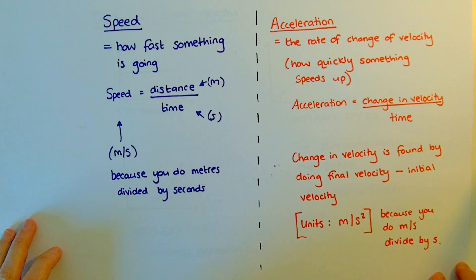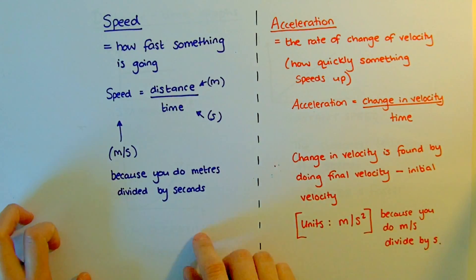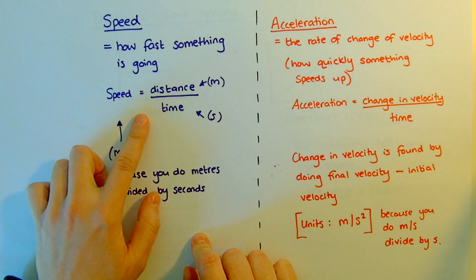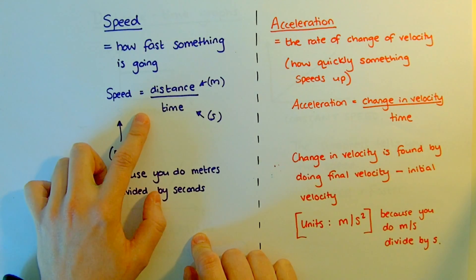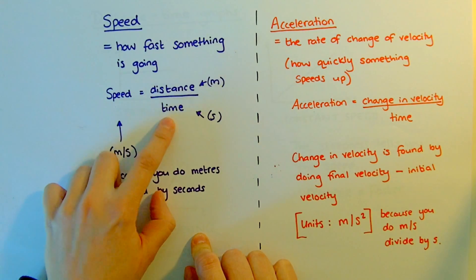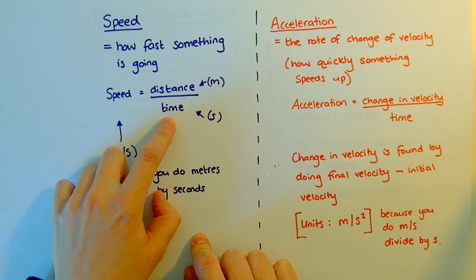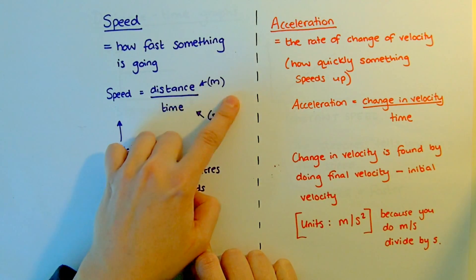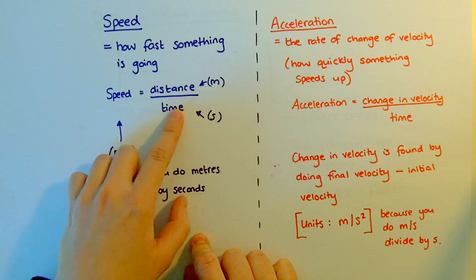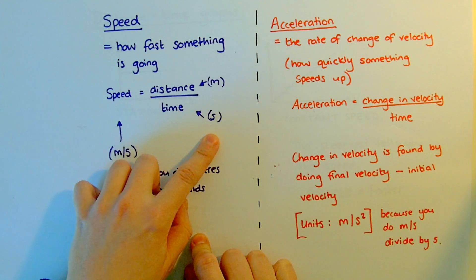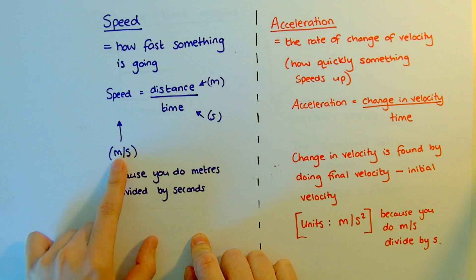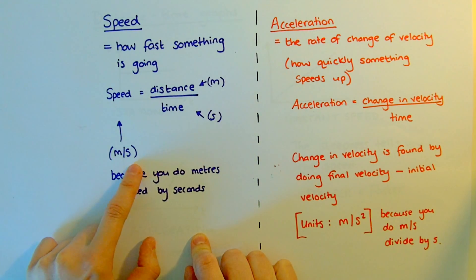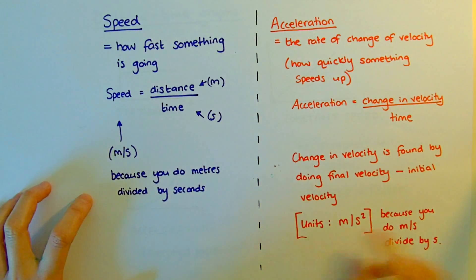Speed is how fast something is going. We've used this equation since year 7: distance divided by time. If distance is in metres and time is in seconds, your speed — the units — will be metres per second.